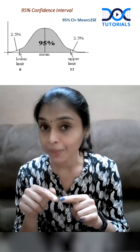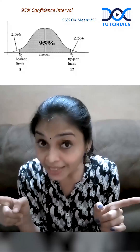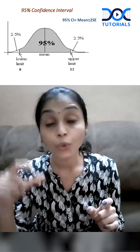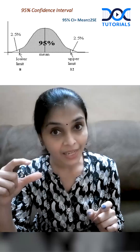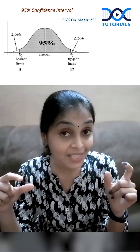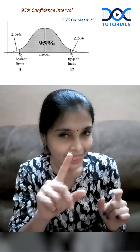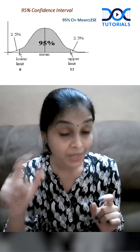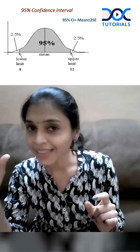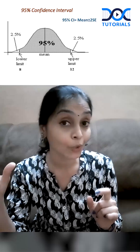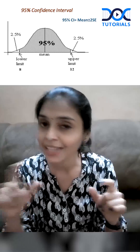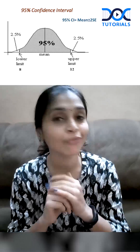That means 5% of values are outside this normal limit — of which 2.5% are towards one side and 2.5% are towards the other side. That means 2.5% of values are more than the upper limit of confidence and 2.5% of values are less than the lower limit of confidence.